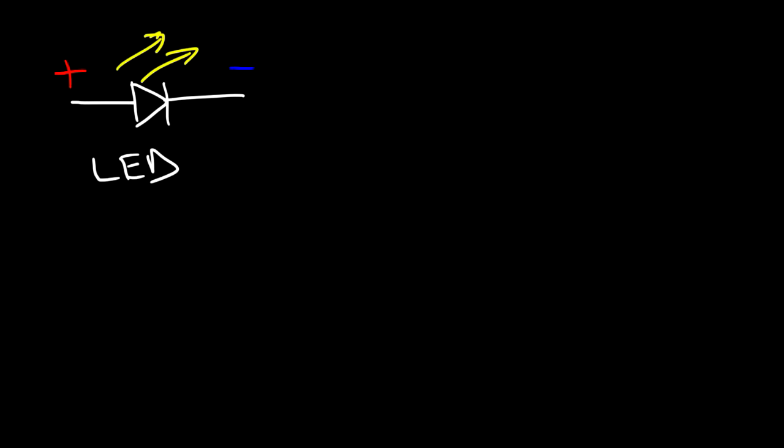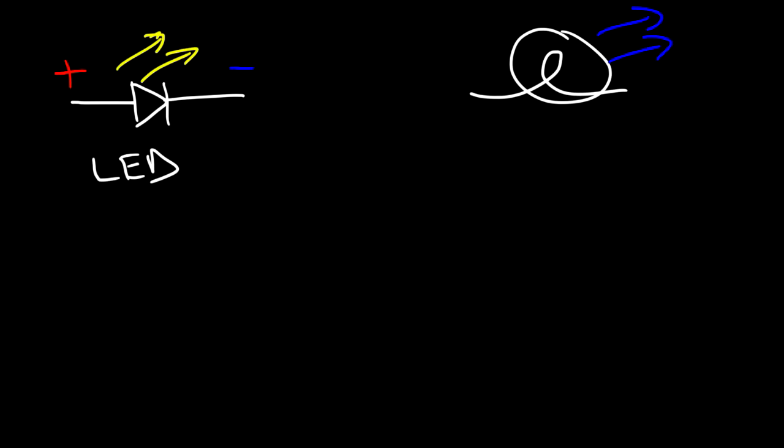Next we have the light emitting diode. Like any other diode, this is the anode and this is the cathode. The key feature that distinguishes an LED from a regular diode is the two arrows showing that this diode emits light. Light emitting diodes are very efficient in converting electrical energy into light energy and don't generate a lot of heat, whereas an incandescent light bulb converts a lot of electricity into heat. If you use LEDs, your house is going to stay cool relatively longer.